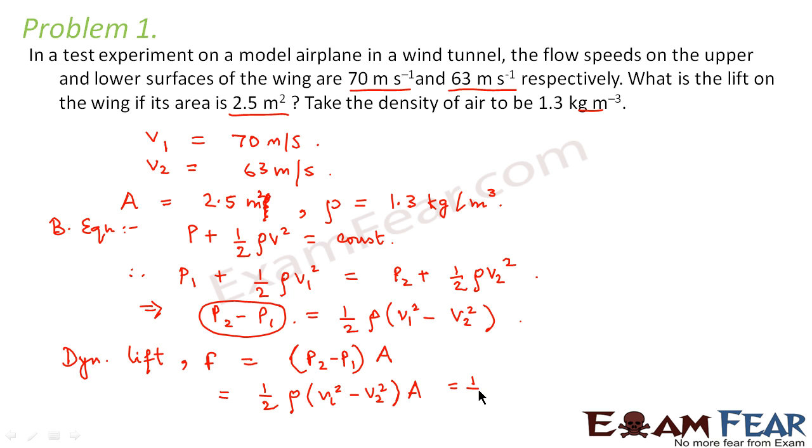So we will put the values: that is half into 1.3 into v1 square, that is 70 square minus 63 square, into cross sectional area that is 2.5. So this comes out to be 1.51 into 10 to the power 3 Newton.